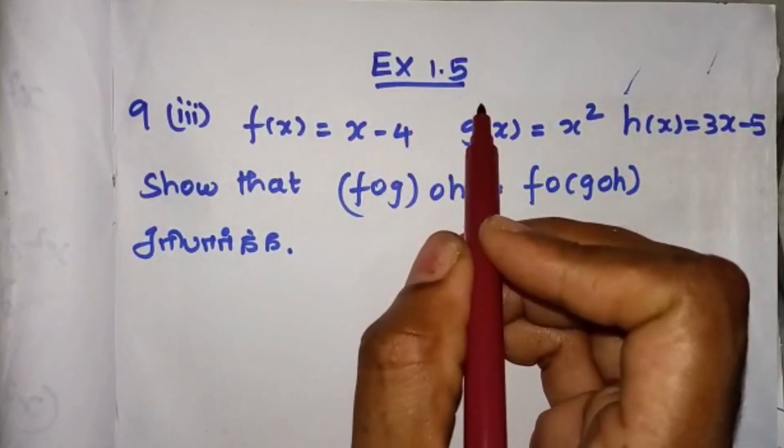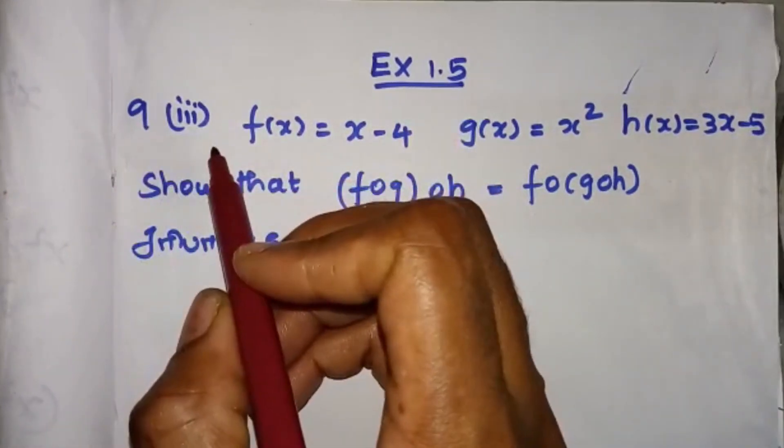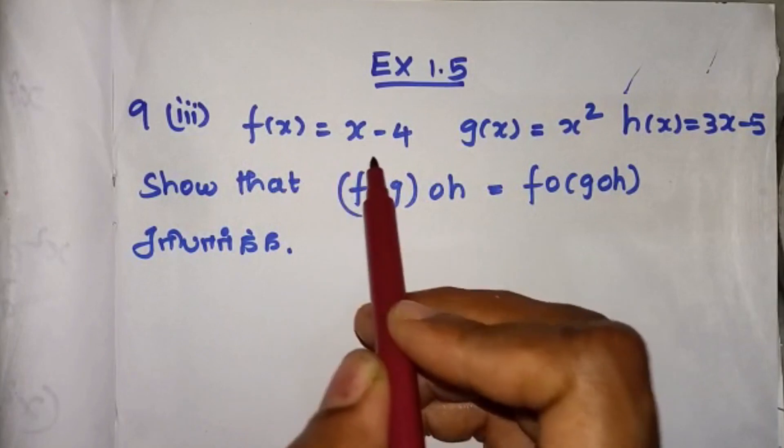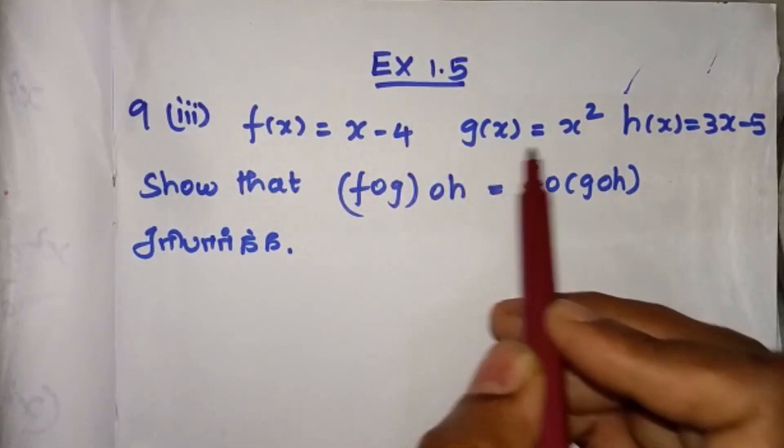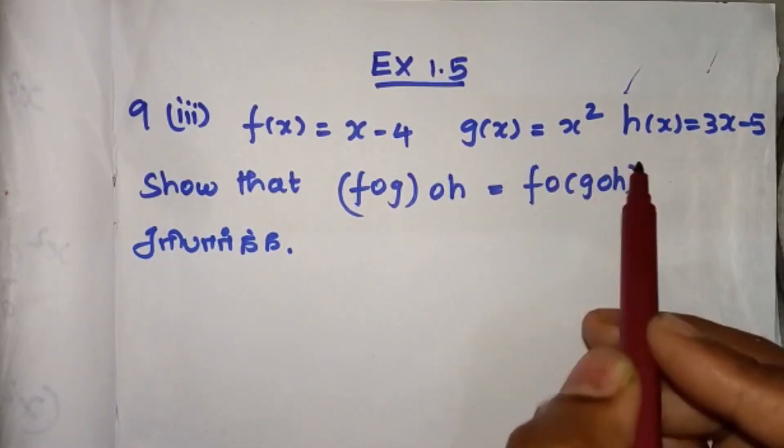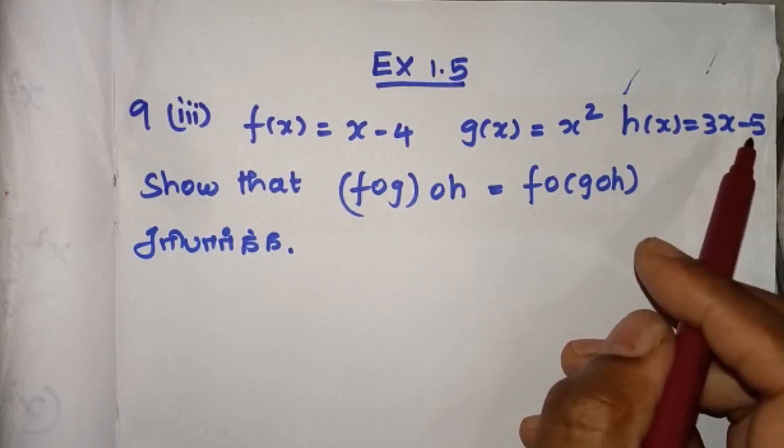Let's talk about exercise 1.5, in the 9th, 3rd sum. f of x equal to x minus 4, g of x equal to x squared, h of x equal to 3x minus 5.